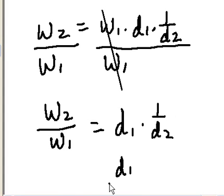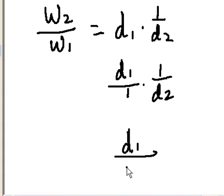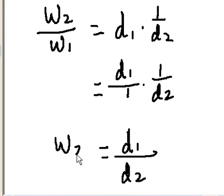That's the same as saying D1 over 1 times 1 over D2. Multiply the numerators and the denominators: D1 times 1 is D1, and 1 times D2 is D2. So we get W2 over W1 equals D1 over D2, and that's the proportion always referred to when doing these kinds of problems.